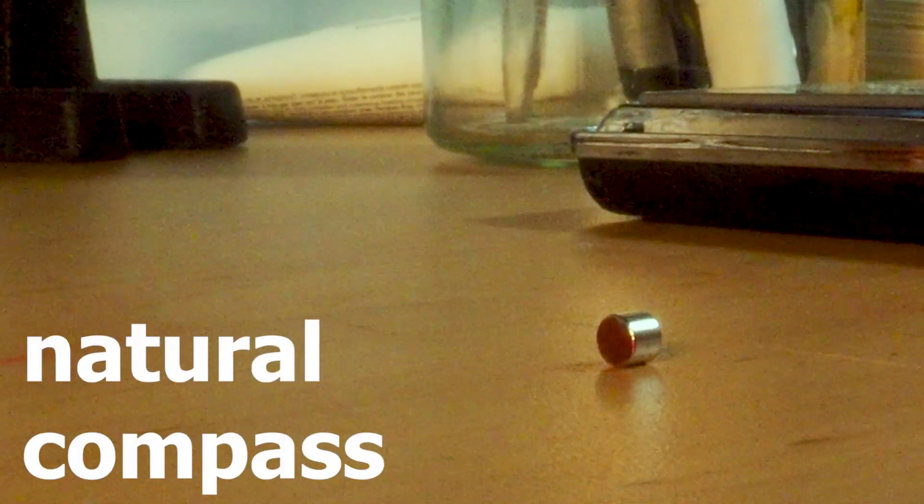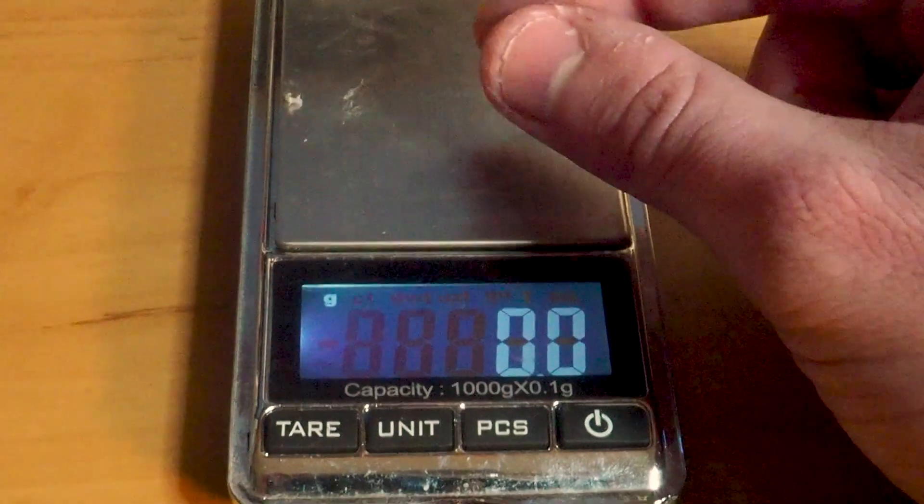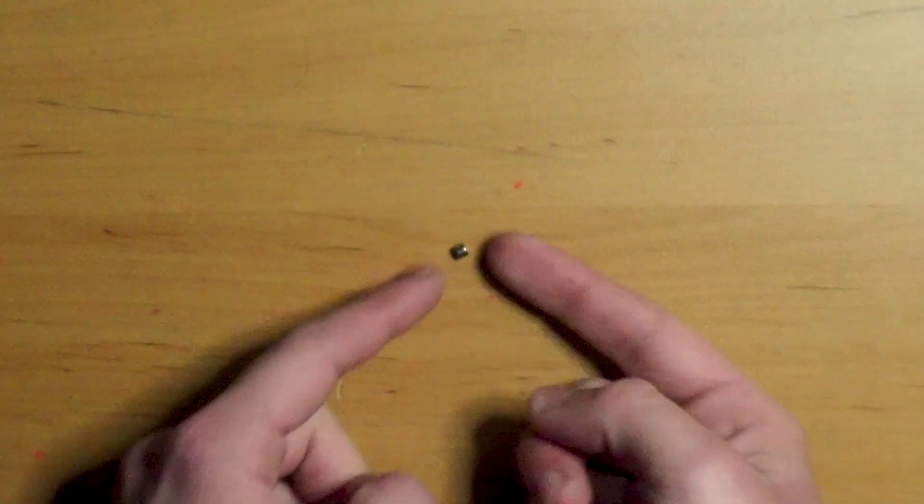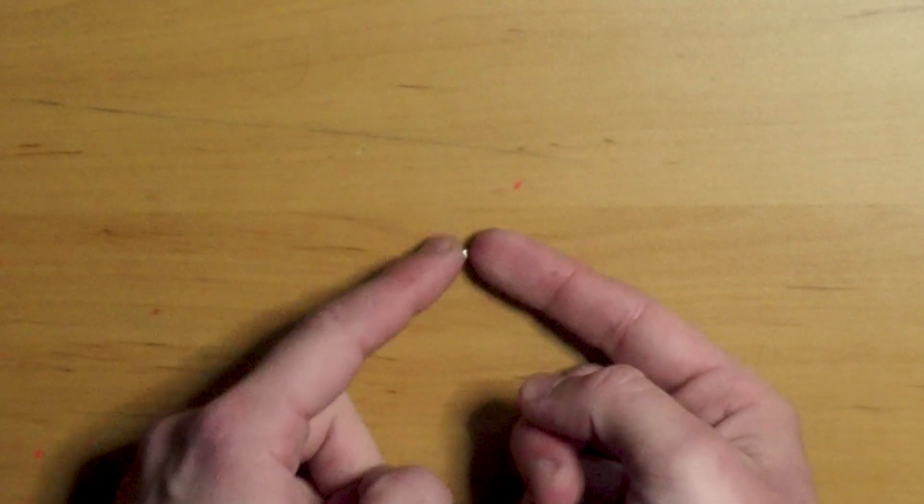But this tiny N52 magnet is sort of a natural compass. Its magnetic field is so strong when compared to its weight that it can overcome its friction on the table. So when Earth's magnetic field crosses the strong magnetic flux of the magnet, it exerts a force larger than its friction and rotates the magnet.